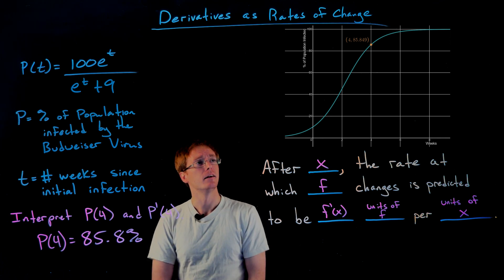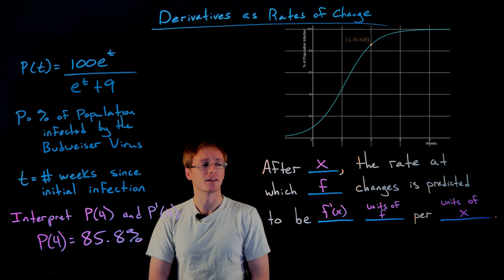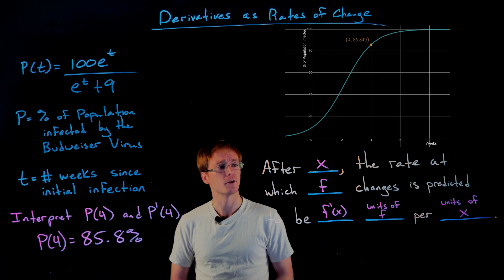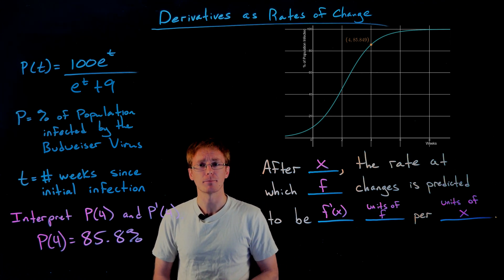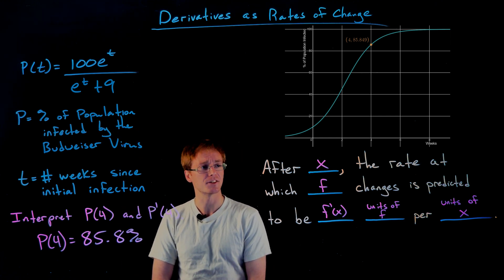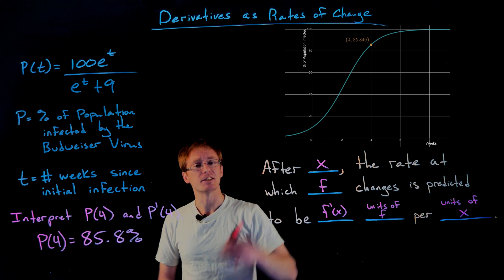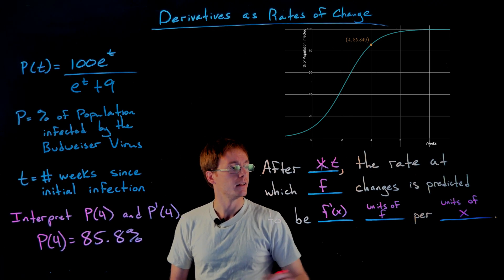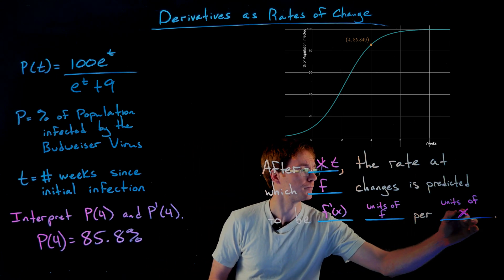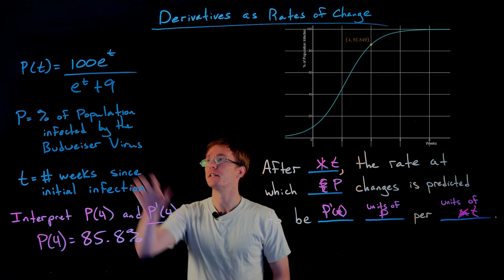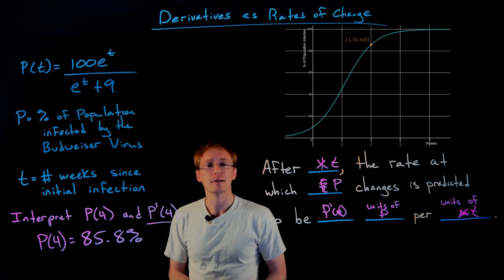What is the derivative at 4 telling us? We could use the tangent line interpretation, but we really need to use the Madlib and fill in the blanks. A couple of things to notice: we're not using f and x in this example. Our function is called p and the independent variable is t, so each x turns into t and each f turns into p.